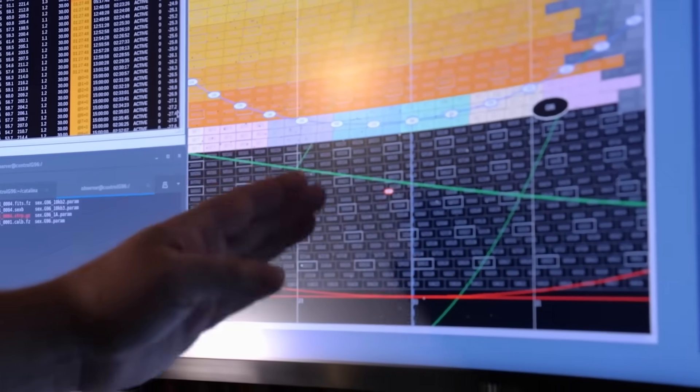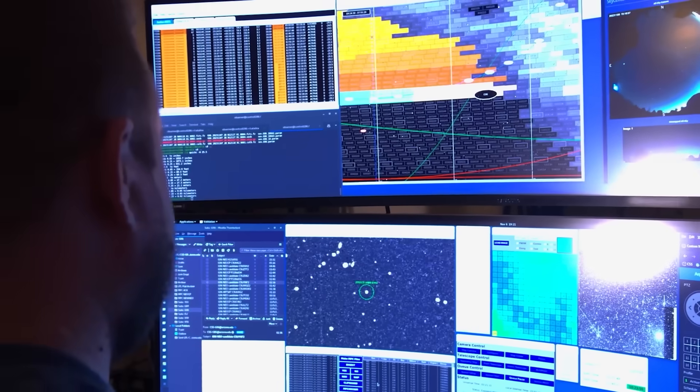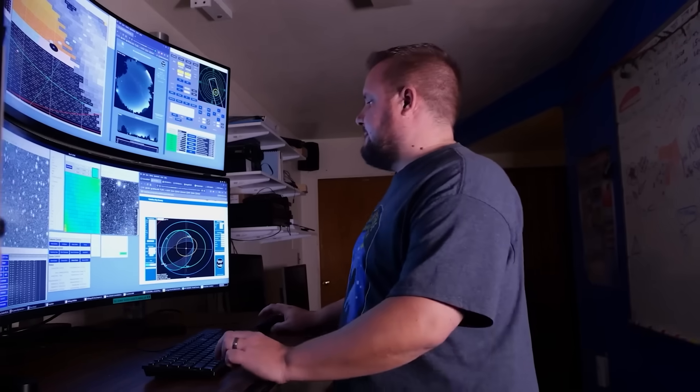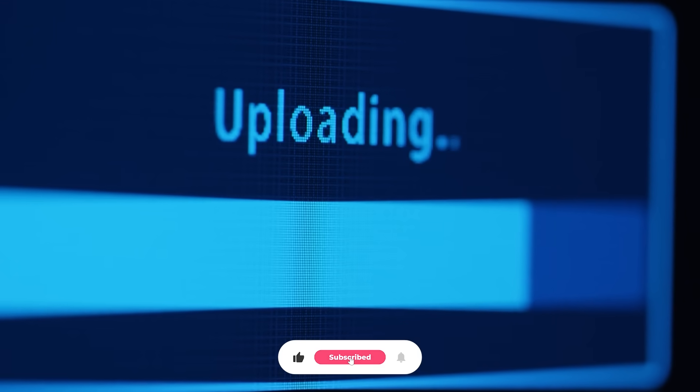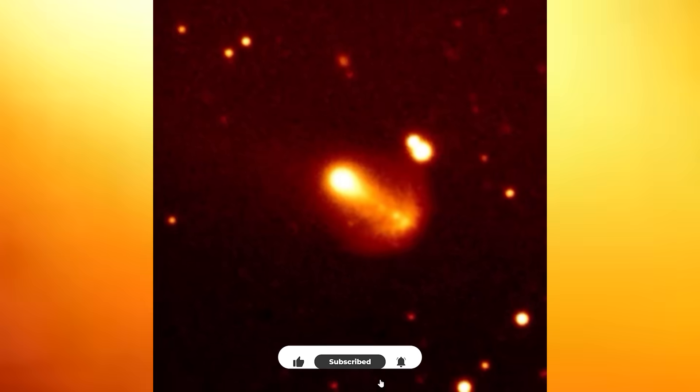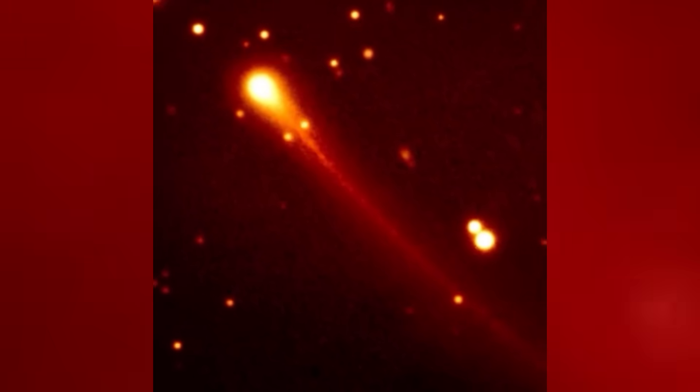For months, astronomers around the world had tracked a strange traveler moving through the solar system—an icy, fast-moving body that wasn't from here. At first, it was a curiosity. Then it became an obsession. By the time China's data reached the international community, 3i Atlas was no longer just another interstellar comet.